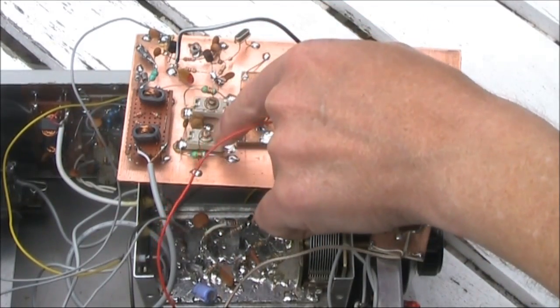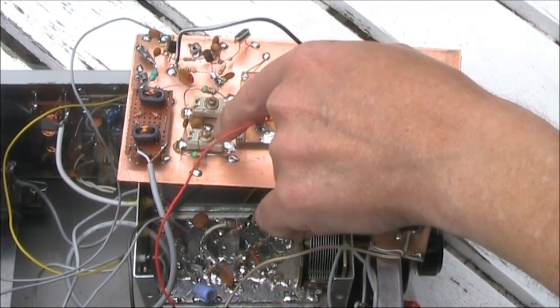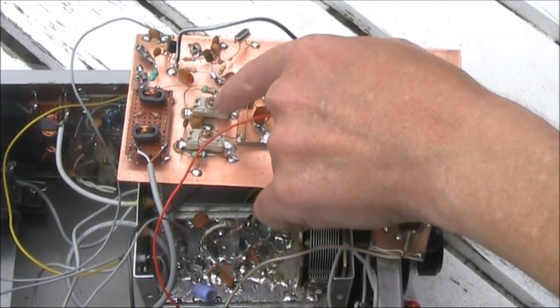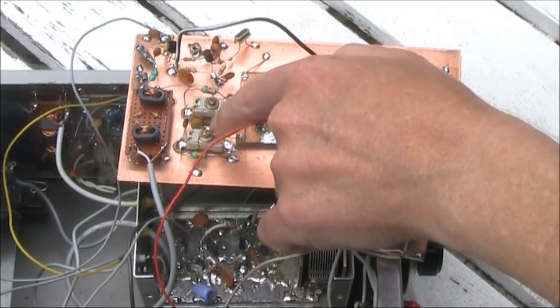The output from this mixer goes to this double-tuned circuit, which further cleans up the signal. It passes signals on 7MHz and no other frequencies.